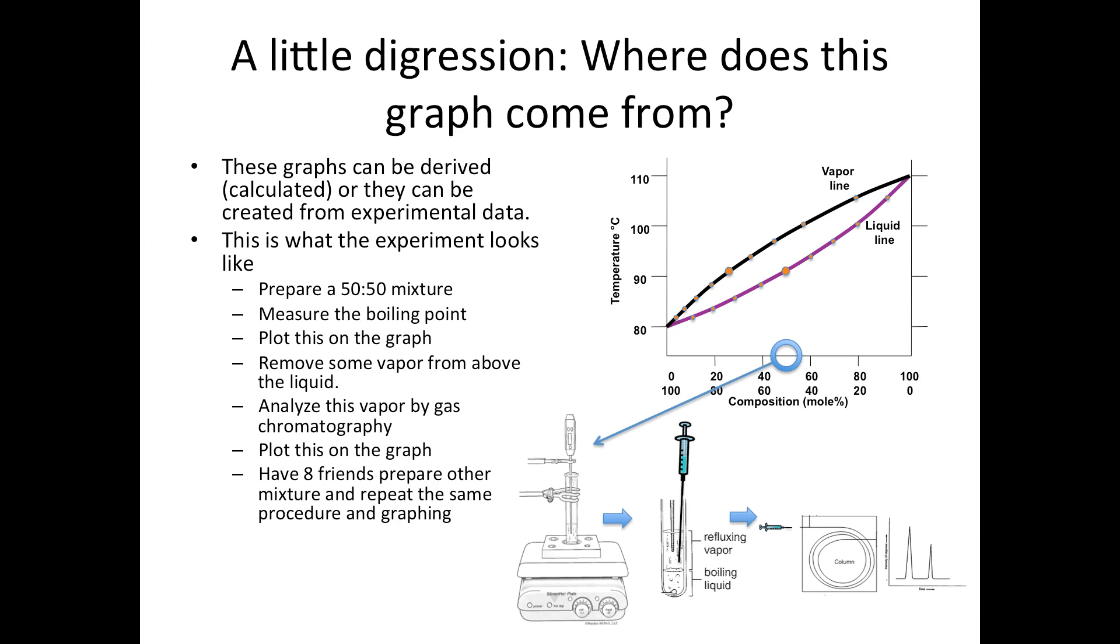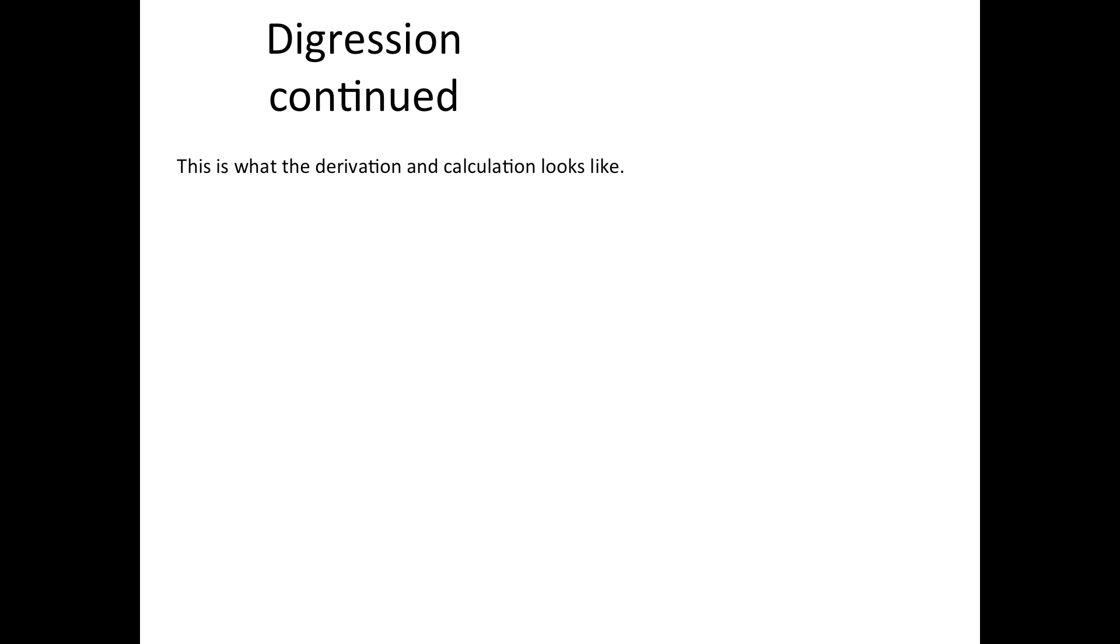That's how we do an experiment to determine the liquid line and the vapor line. This information, as I mentioned, can also be derived or calculated. Here's what that calculation looks like. First, we've already seen Raoult's law in this lecture, and Raoult's law says that when you have a mixture of liquids, the pressure exerted by a component of that liquid is simply the vapor pressure of the pure component times its mole fraction.